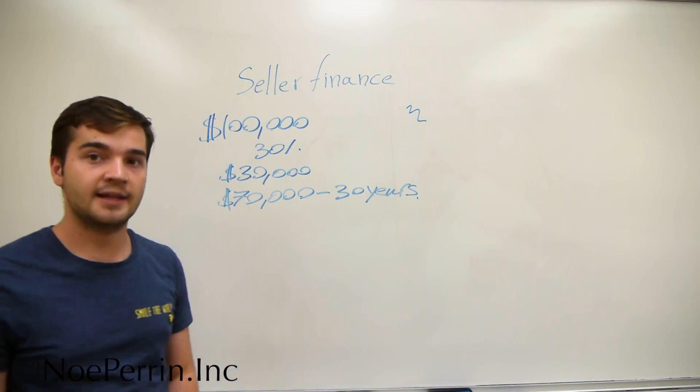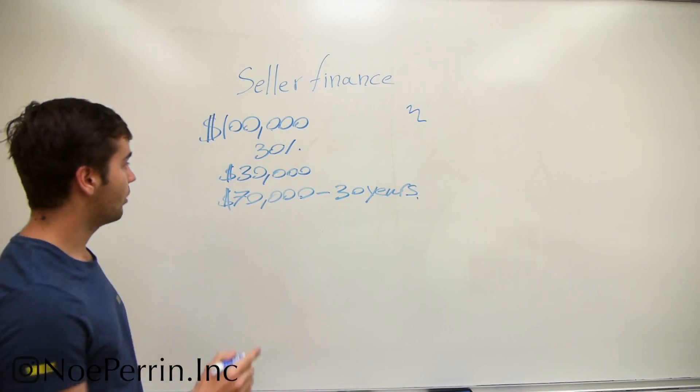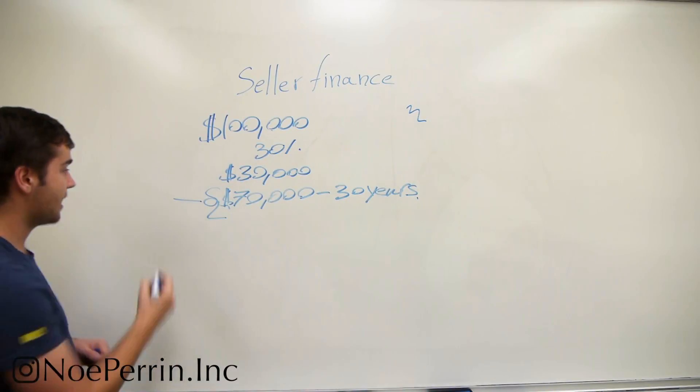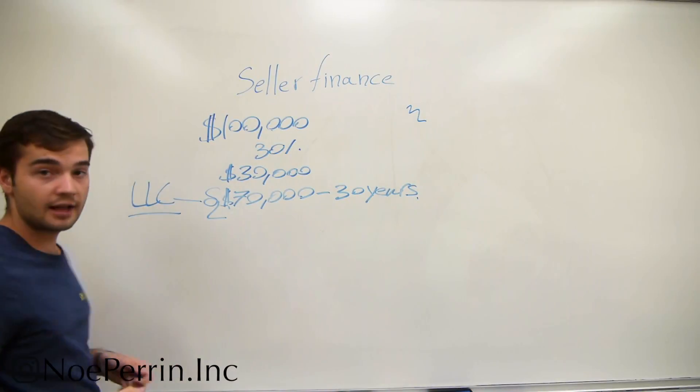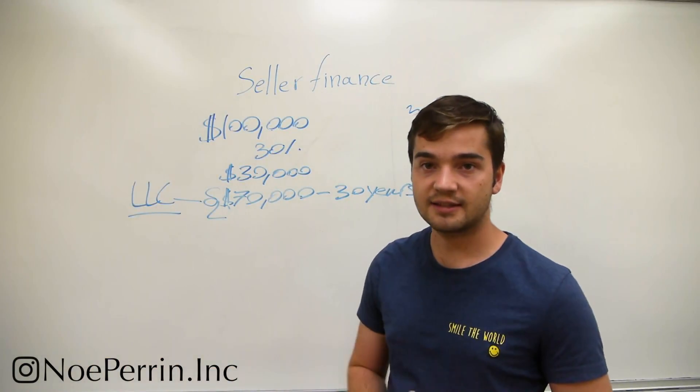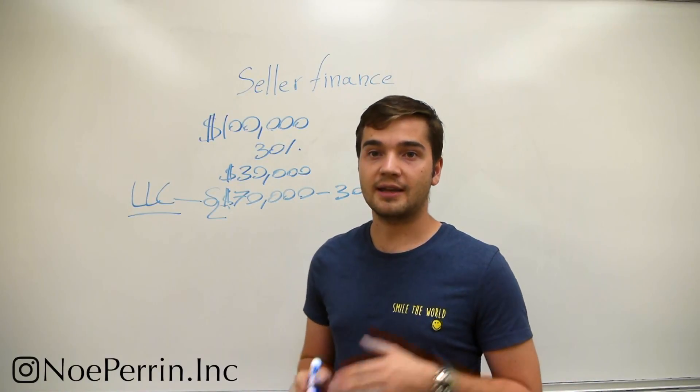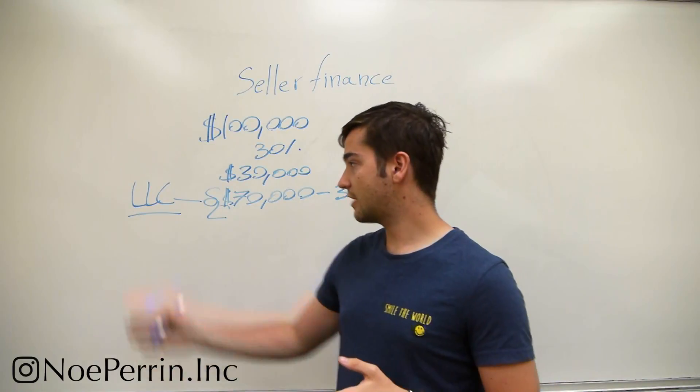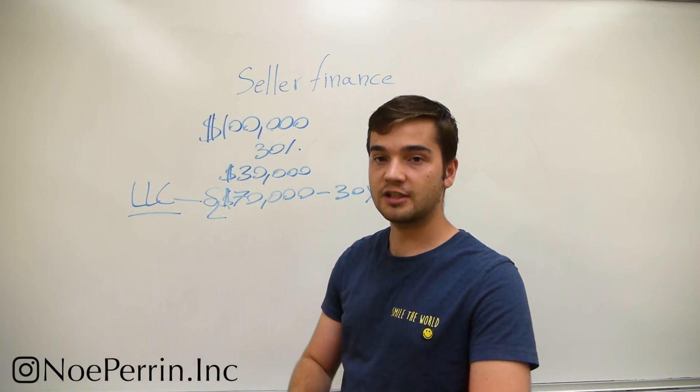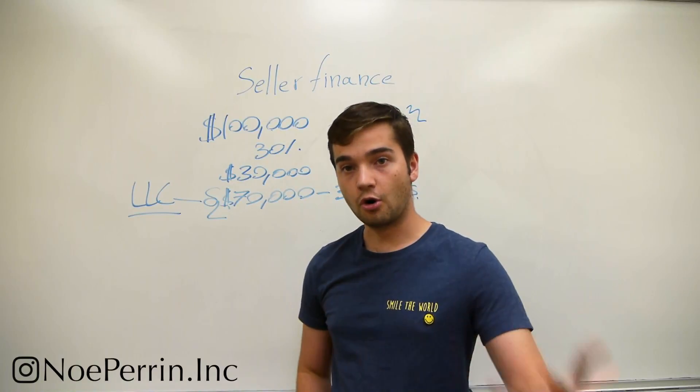The good thing about seller financing is if you're smart, you're going to be able to position it in a way where this $70,000, instead of it being in a personal name, you're actually going to put it under your LLC. Your LLC is your limited liability company. The reason why that is so good to have is that in the event that you cannot make these payments anymore, instead of it going against your personal credit history, it would actually only affect the credit history of the LLC. And if it forecloses, the only thing that's going to happen is that you're going to lose the property instead of actually losing your own personal assets.